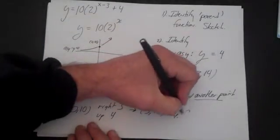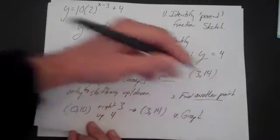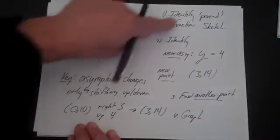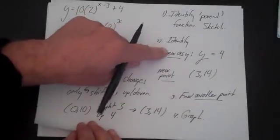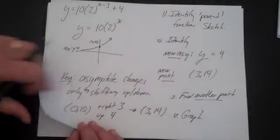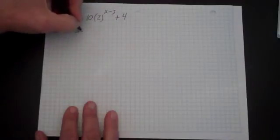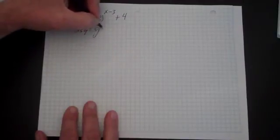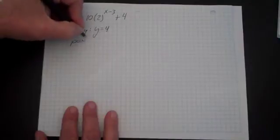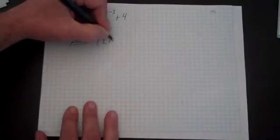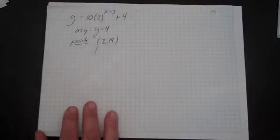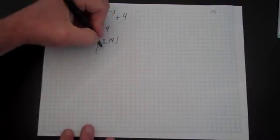So the intercept here is going to be 0 comma 5.25. And then the fourth thing is I'll use some graph paper, and I'll just graph it. So what I have here is I know the general shape from the parent function. I have the new asymptote, and now two points. So let's go ahead and graph that. You have y equals 10 times 2 to the x minus 3 plus 4. You have the asymptote, which is y equals 4. You have two points. You have 3 comma 14 and you have 0 comma 5.25.